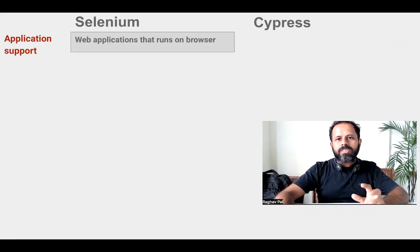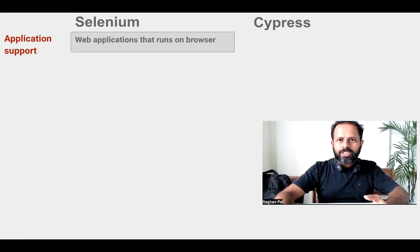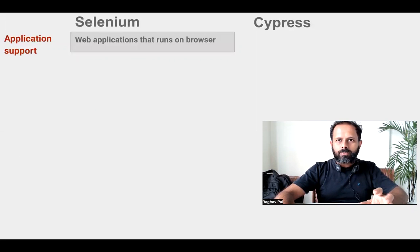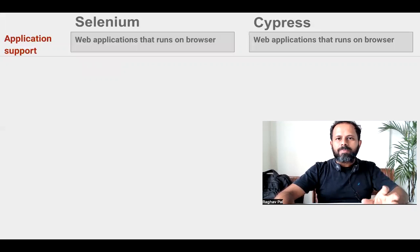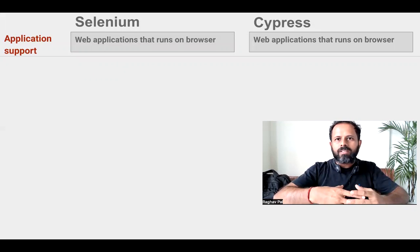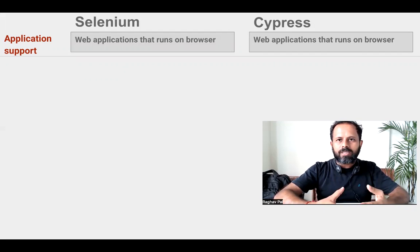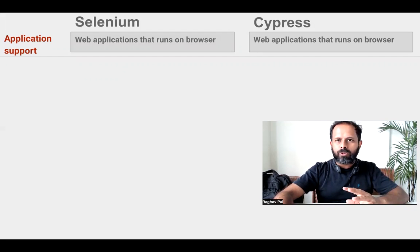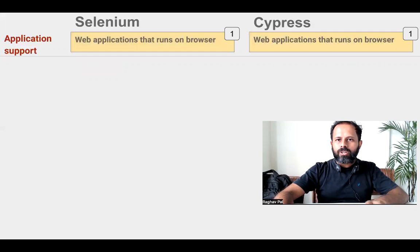Let's start with application support. Both Selenium and Cypress are created for browser automation — they can handle any web application that runs on a browser. Both can automate browser actions like clicking a button, navigating to a link, taking a screenshot, verifying something on the page, or setting text in a text box. So we can give one point to both of these.